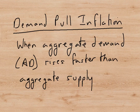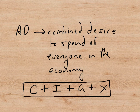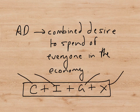Let's look first at demand pull inflation. This type of inflation is a situation that happens when aggregate demand rises faster than aggregate supply — AD is rising much more quickly than AS. Aggregate demand is the combined desire to spend of everyone in the economy: the combined desire to consume. And everyone includes households, firms, governments, and foreigners.